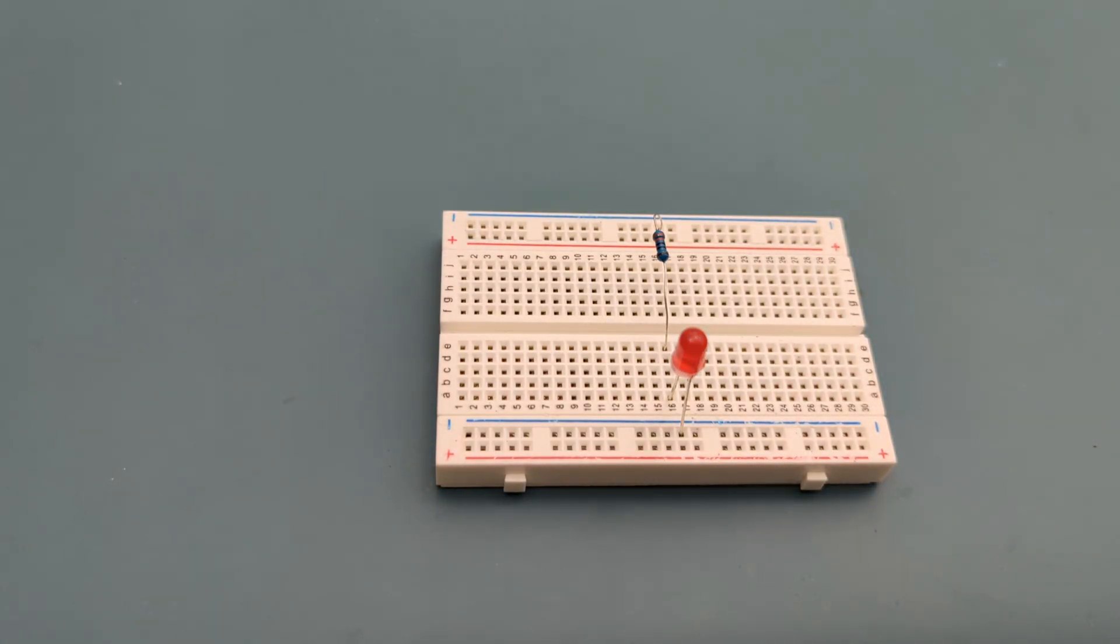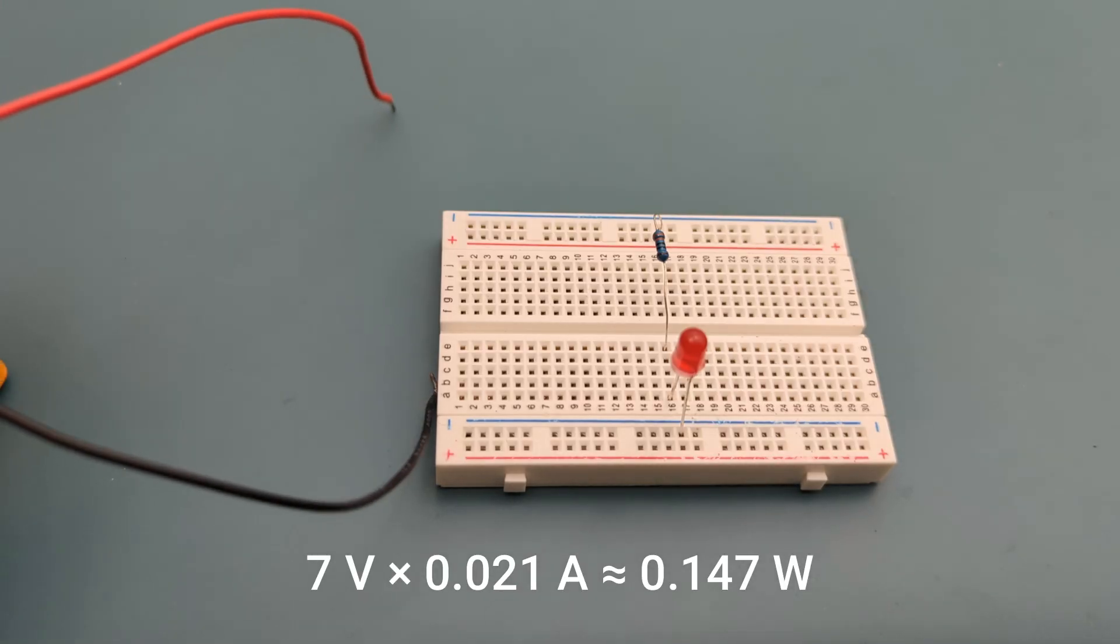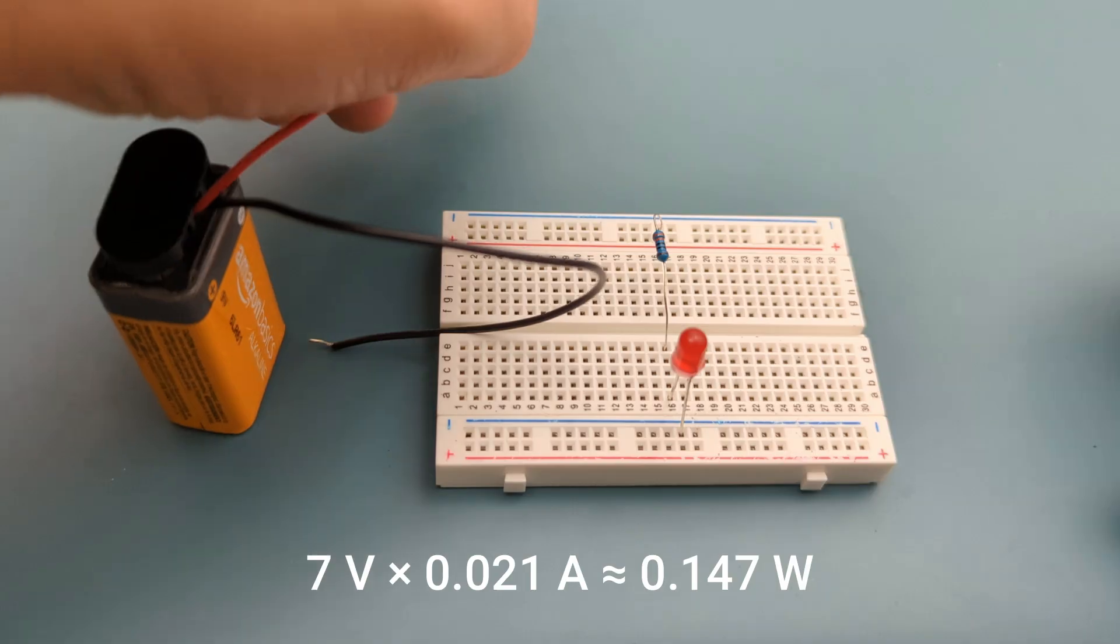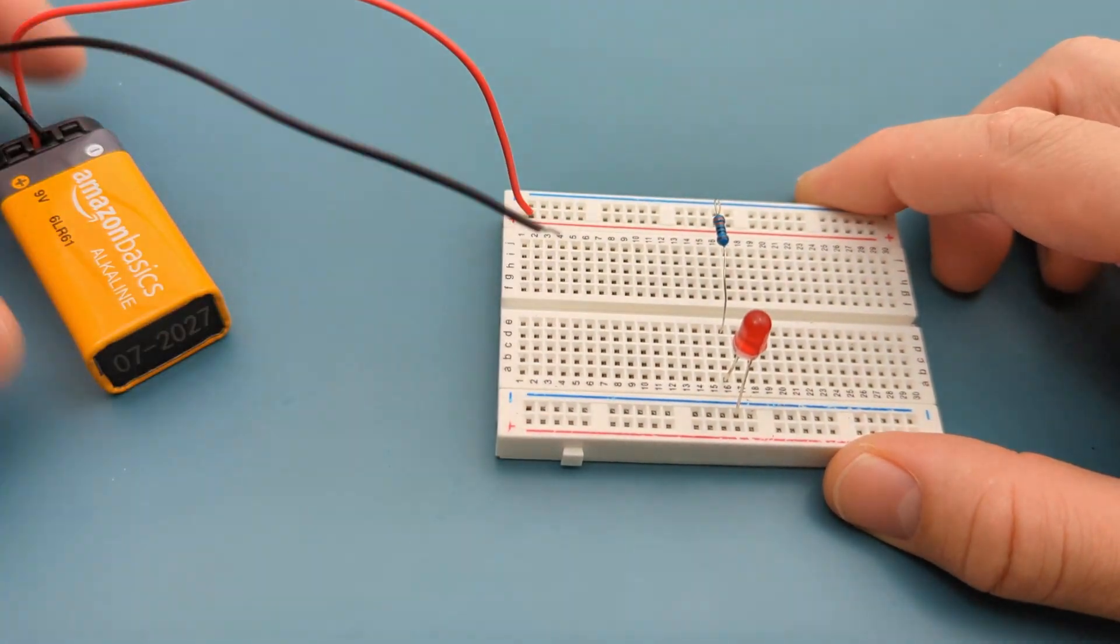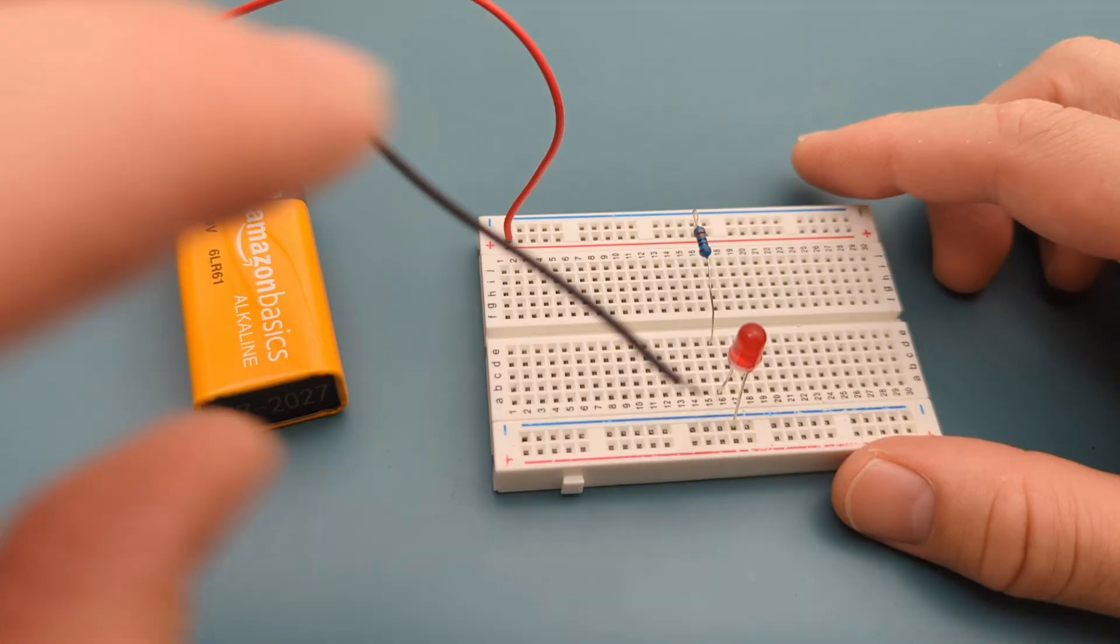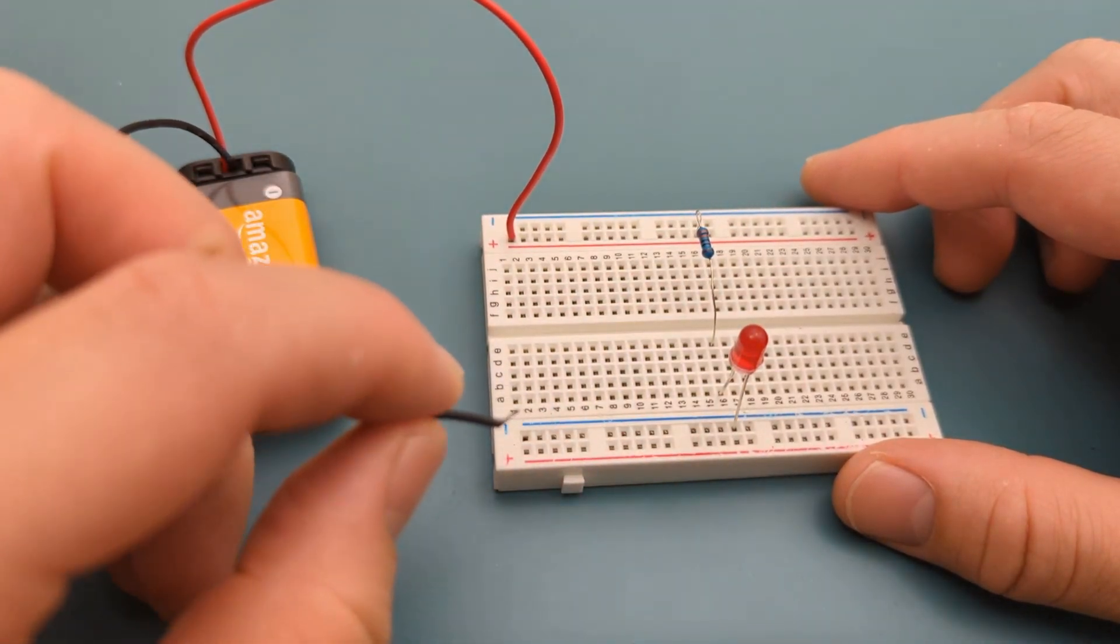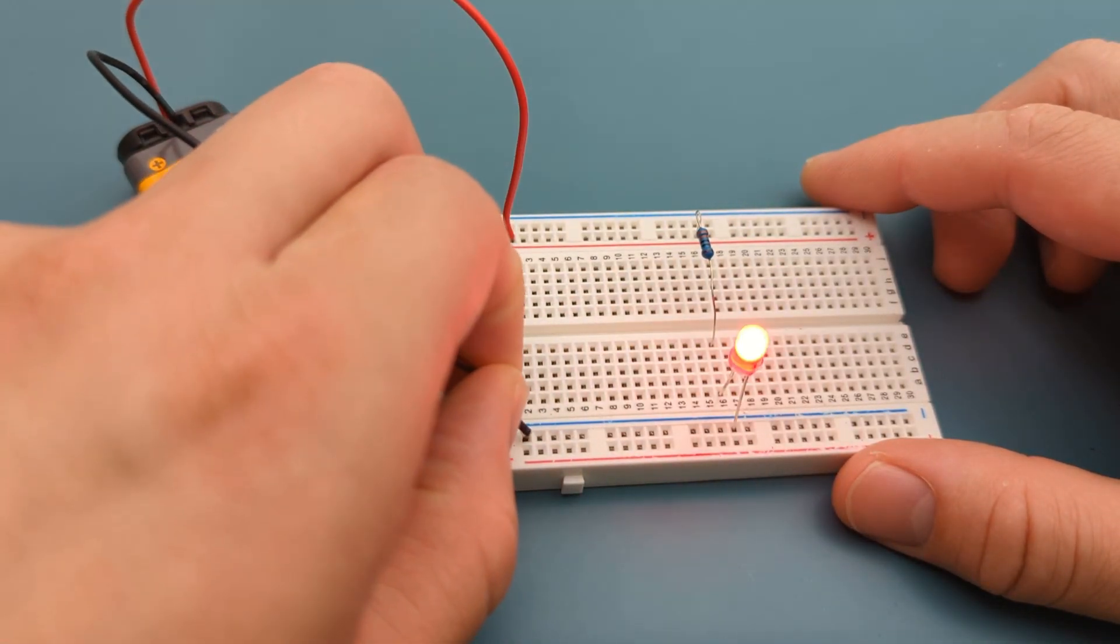Now check heat in the resistor. P equals V times I equals 7 volts times 0.021 amps approximately, 0.147 watts. A 1/4 watt part works on paper, but give yourself headroom. Choose a half a watt resistor so it runs cool and lasts longer, especially inside a case.